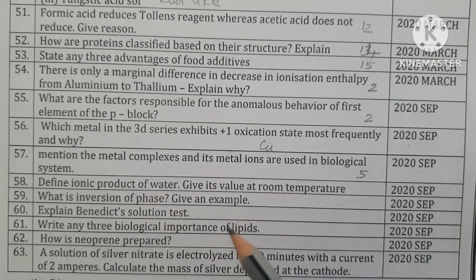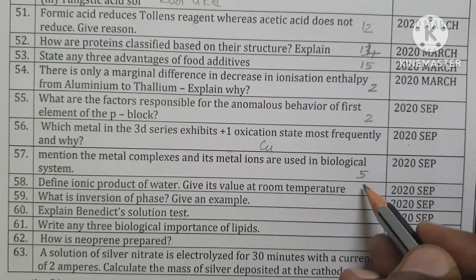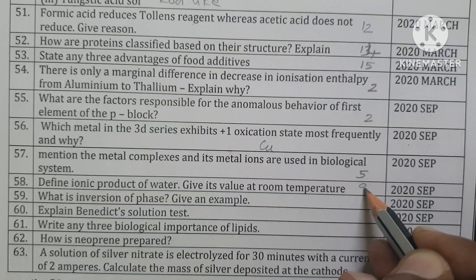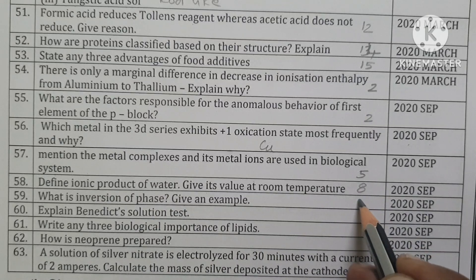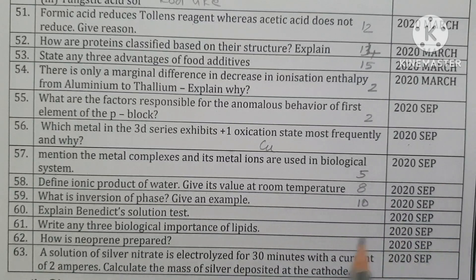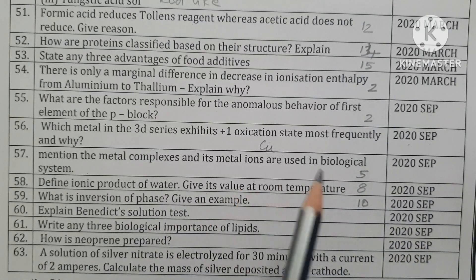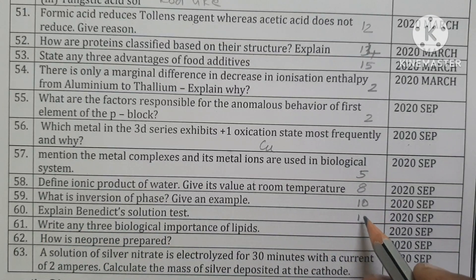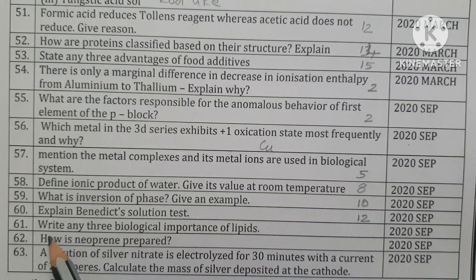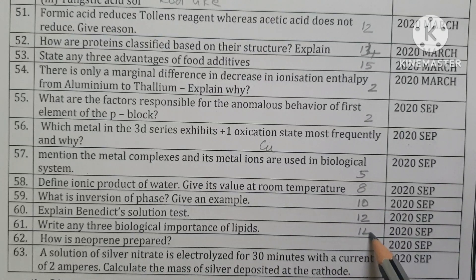Define ionic product of water and give its value at room temperature — 8th unit: Kw = 1 × 10⁻¹⁴. What is inversion of a sol? — 10th unit, give example: W/O and O/W conversions. Explain Benedict's solution test — 12th unit: test for aldehydes, Tollens' test, Fehling's test, Benedict's test. List any three biological importances of lipids — 14th unit. How is neoprene prepared? — 15th unit.